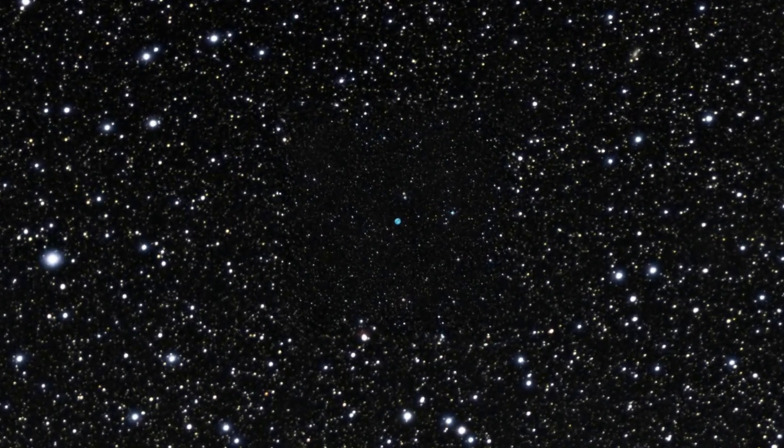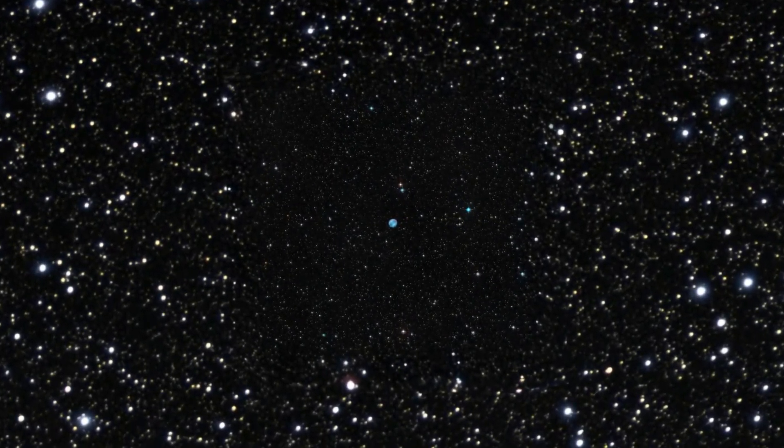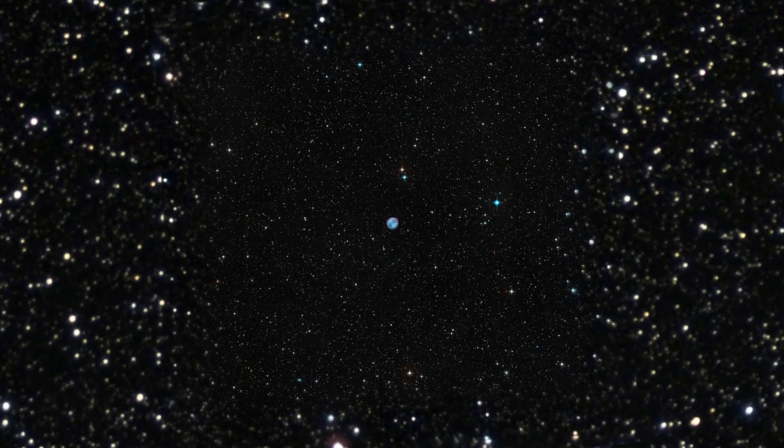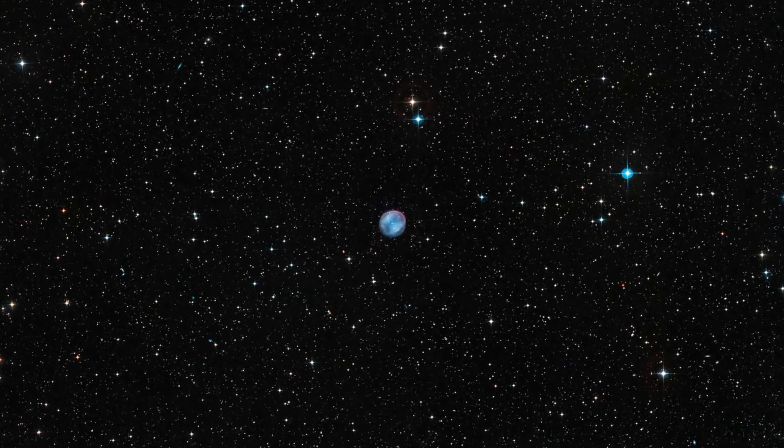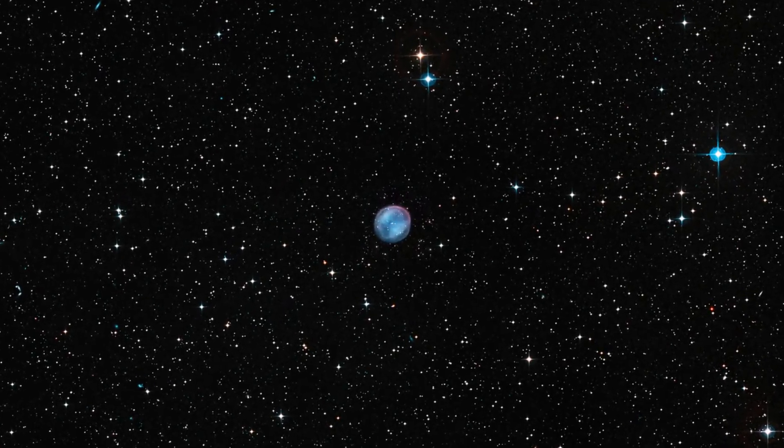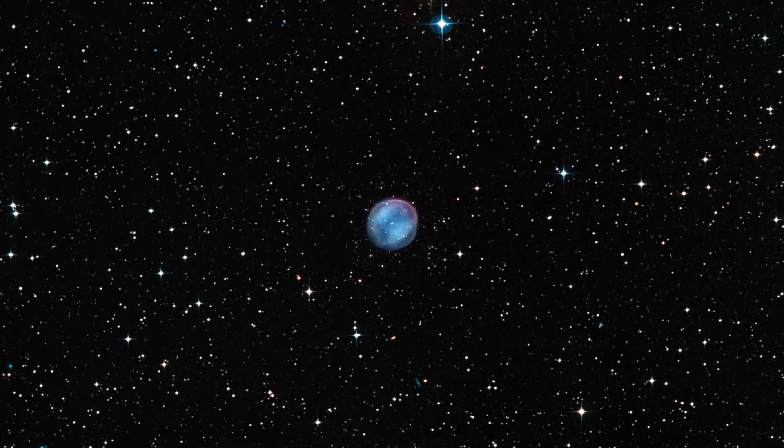At the end of its life, a star shines especially in the ultraviolet. This radiation ionizes the previously expelled gases, thus forming a planetary nebula.